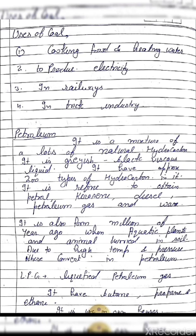Now the uses of petroleum: petroleum is a mixture of many natural hydrocarbons. It is a black, viscous liquid. It has approximately 200 different types of hydrocarbons in it — hydrocarbons are compounds having hydrogen and carbon in them. When petroleum is refined by fractional distillation technology,